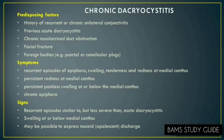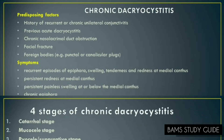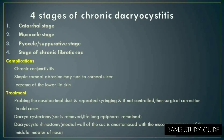Chronic Dacryocystitis is more common than acute, and its etiology may be multifactorial — stasis of tears in the lacrimal sac and mild infection of long duration. Symptoms include recurrent episodes of epiphora, swelling, tenderness and redness at the medial canthus, persistent painless swelling at or below the medial canthus, and chronic epiphora. Signs include recurrent episodes similar to or less severe than acute Dacryocystitis, swelling at or below medial canthus, and it may be possible to express mucoid discharge. The four stages are: catarrhal stage, mucosal stage, pioceal or suppurative stage, and stage of chronic fibrotic sac.